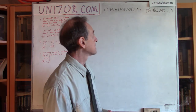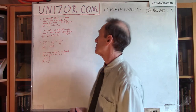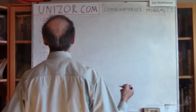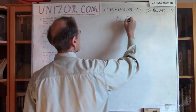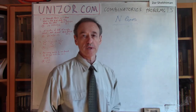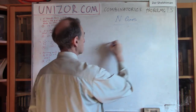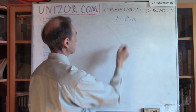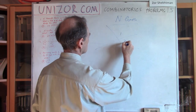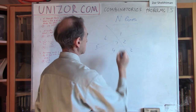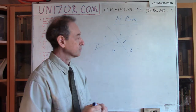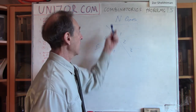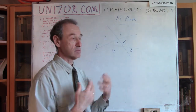So without further ado, let me just address one problem after another. Problem number one: you have n different straight lines on the plane. They divide the plane into some parts, some areas. In this particular case I have three lines and they divide into one, two, three, four, five, six, seven different parts. The question is: what's the maximum number of parts n lines on the plane can divide that plane?